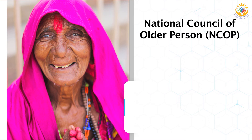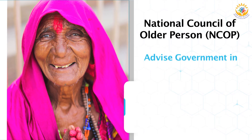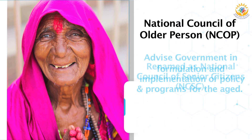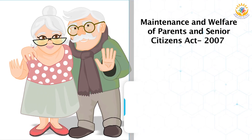Then comes the National Council of Older Persons. In pursuit of NPOP 1999, a council for older persons was constituted under the chairmanship of the Union Ministry of Social Justice and Empowerment to oversee implementation of the policy. The NCOP is the highest body to advise the government in formulating and implementing policies and programs for the aged. It was later reconstituted and renamed as the National Council of Senior Citizens.